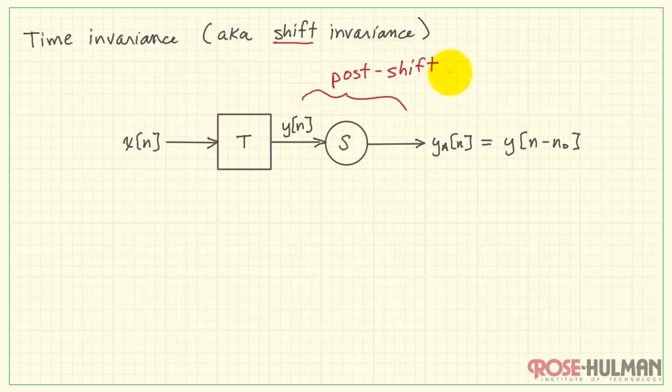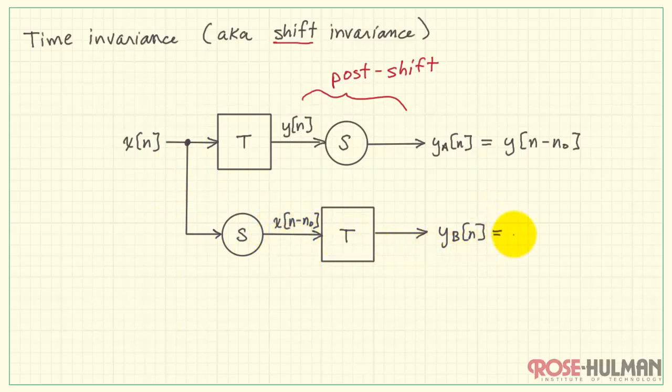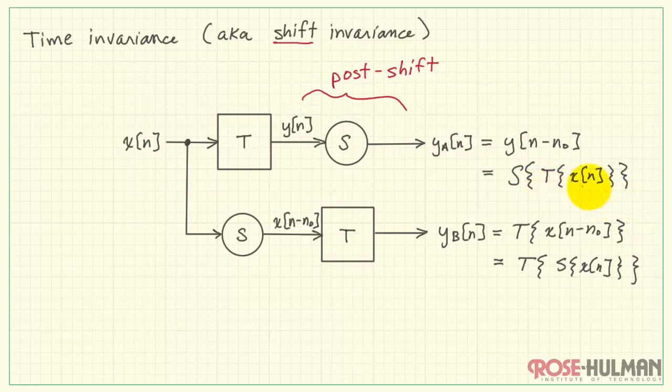Now we see that the shifting here is happening after the system operator T, therefore I'm calling this the post-shift version. Now let's flip this around. Supposing we do the shift operation before we apply it to the operator T. Let's call that output Y sub B of N. Here X of N passes through the shift operator to produce X of N minus N-naught, and then that passes through the system T. Therefore, T is operating on a delayed version of the input. Here we can think of this as being the shifted or delayed version of X after it's been operated on by T. So we had on the top the post-shifted version. Here we have the pre-shifted version.